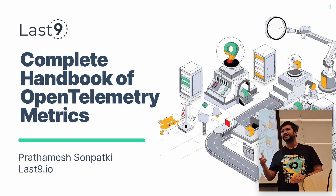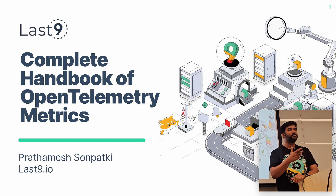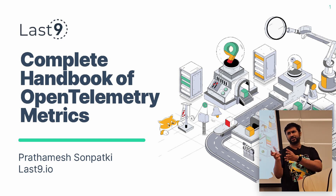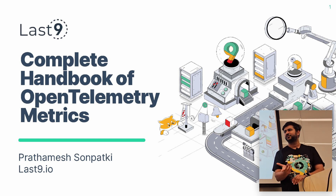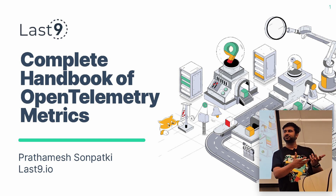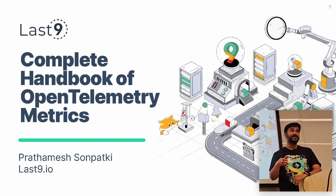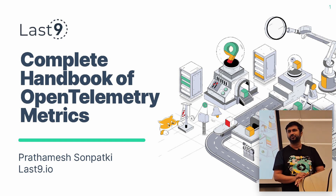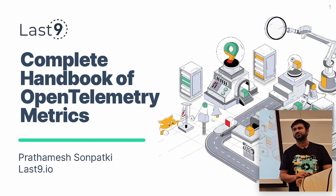Similarly, for any application or any component, there are metrics as well. For an HTTP API, metrics are availability, latency, throughput. For a component like RDS or a database, CPU can be one of the metrics, memory can be one of the metrics. The question is: how do we use those metrics, how do we collect them, how do we see them, how can we get alerted on those metrics? That's the story of how we can use and get benefited from those metrics.